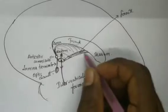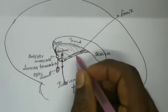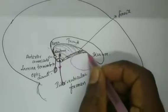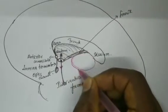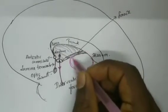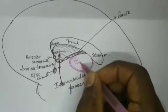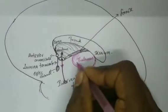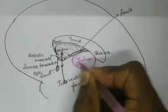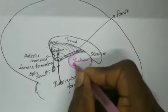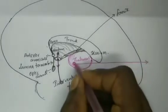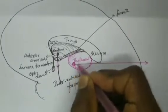Below the fornix we have a mass of gray matter extending up to the splenium, and this bulged portion is called the thalamus. This thalamus is attached to the opposite side thalamus by an adhesion which is present on the surface of the thalamus.